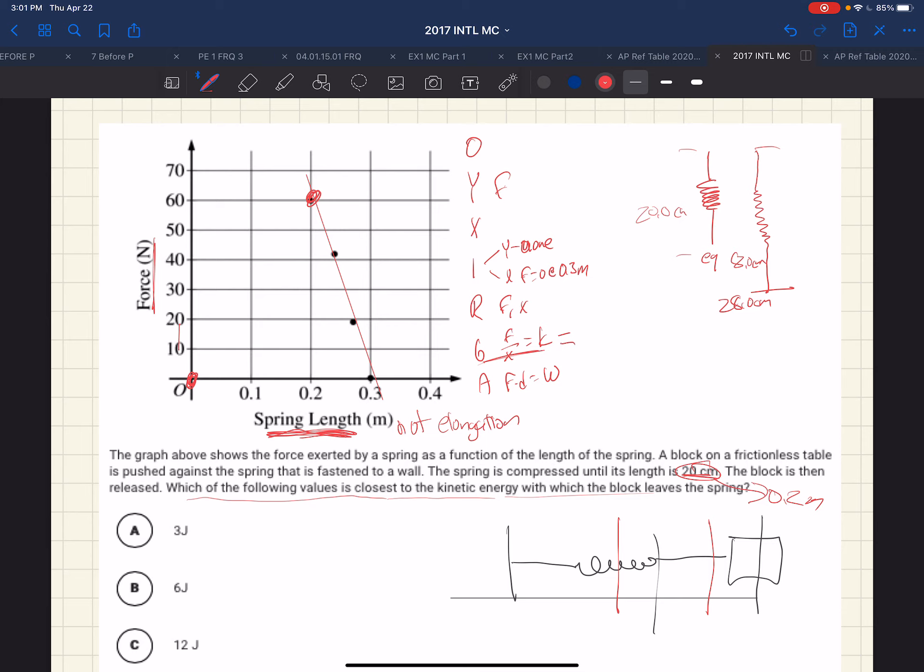So let's start there. And that's going to be 60 minus 0 all over 0.1. So that is going to be 600 newtons per meter. 60 divided by 1 tenth is 600 newtons per meter.